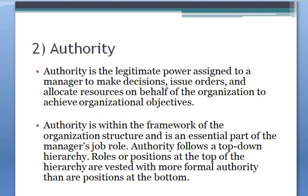The next principle is authority. Authority is the power assigned to a manager to make decisions, issue orders, and allocate resources on behalf of the organization to achieve objectives. As we studied in levels of management — top level, middle level, and operational level — at every stage they have their own roles. The top level is involved in making rules and policies, the middle level takes responsibility to accomplish those objectives following rules and regulations, and the bottom level takes responsibility from the middle level management.